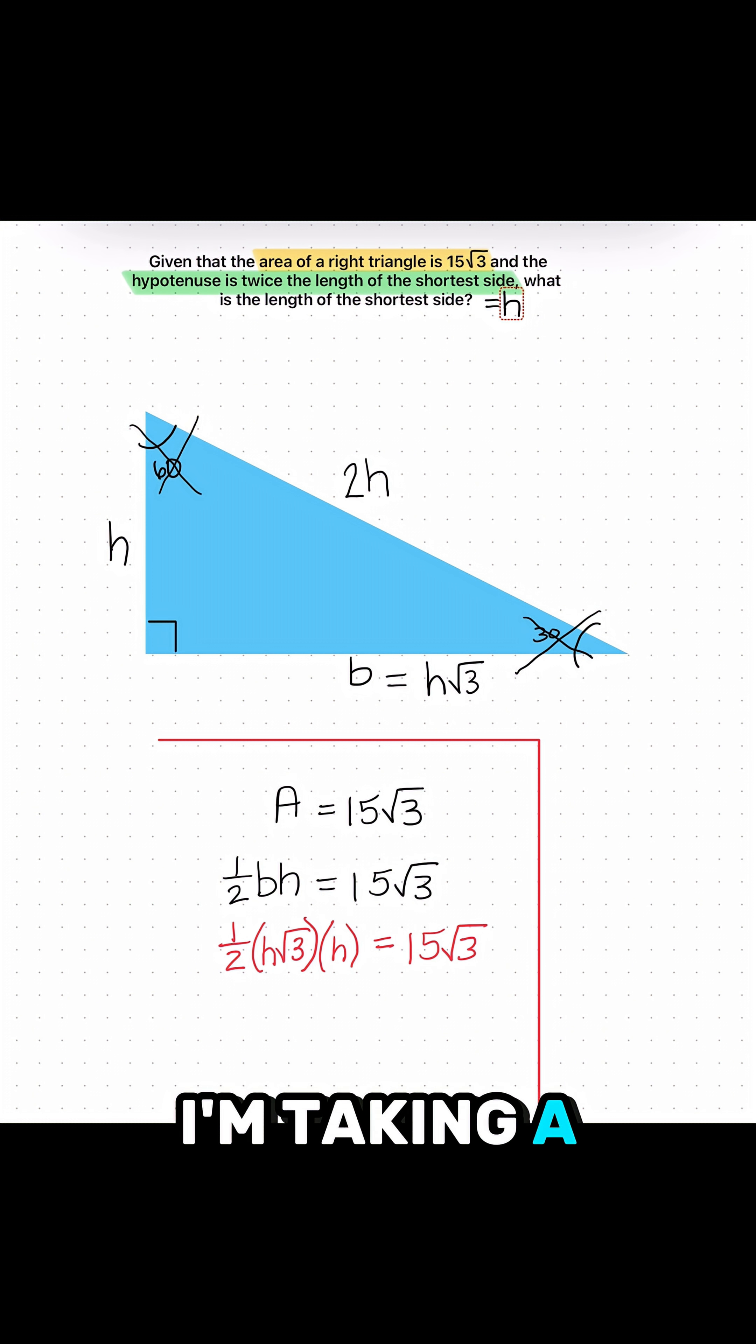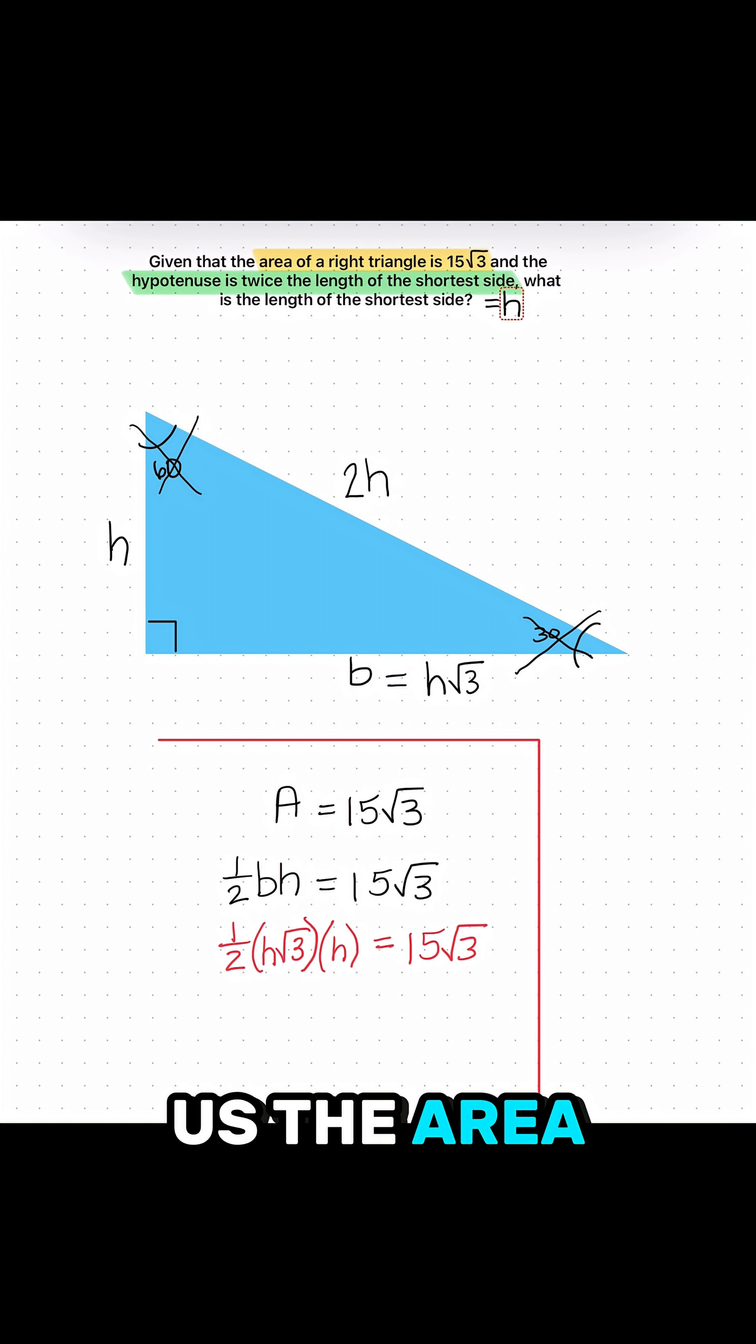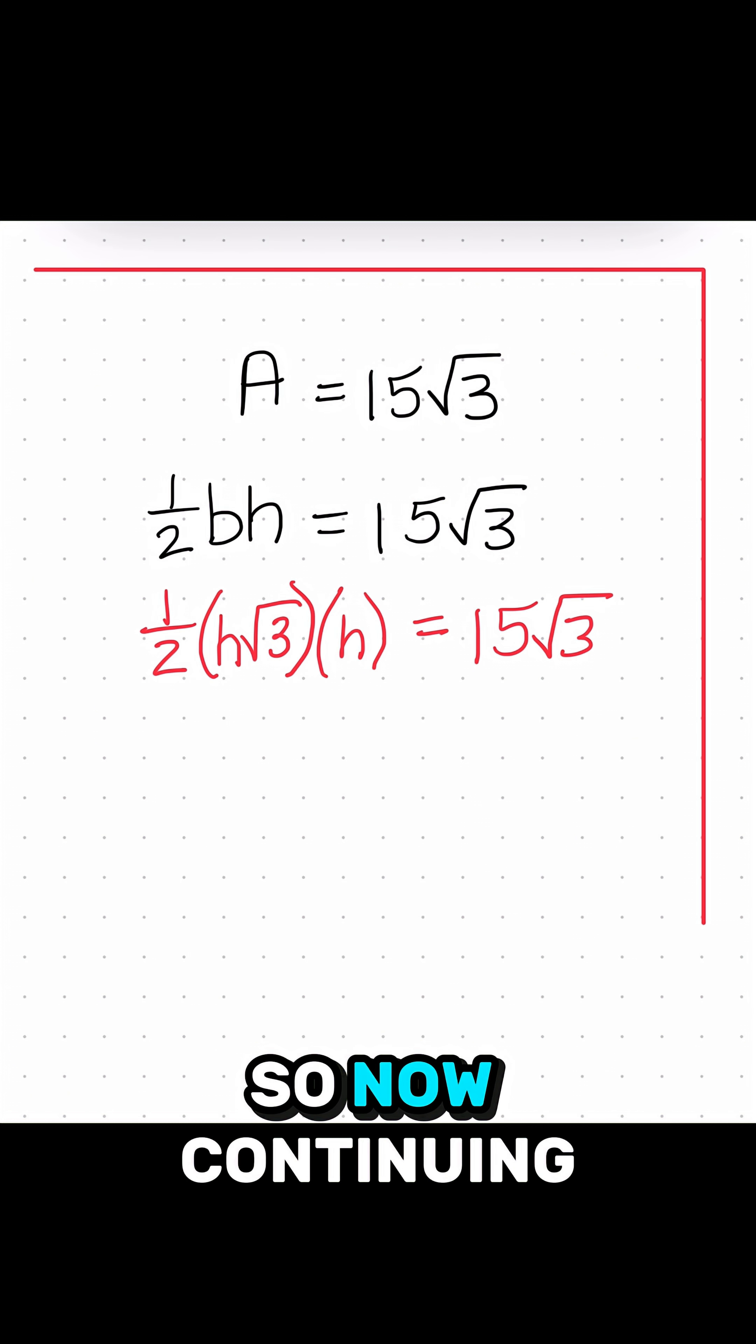So essentially, I'm taking a half of the base times the height because that correlates to the area. And they told us the area is 15 radical 3. So now continuing with this,